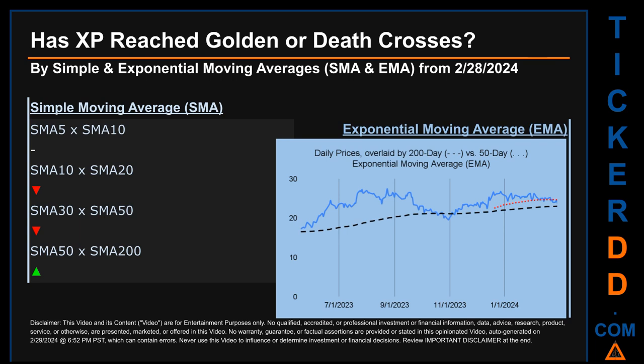Has XP's price reached golden or death crosses? Golden cross and death cross are basic signals that compare average prices across two specified trade day ranges — a short-term versus a long-term range, for example five-day versus 10 trade days. A golden cross is a bullish signal: it appears when a ticker's short-term moving average crosses above its long-term average. Conversely, a death cross is a bearish signal when the short-term crosses below its long-term moving average. For our analysis, we looked at both simple moving average (SMA) and exponential moving average (EMA), the latter giving more weighting to recent prices.